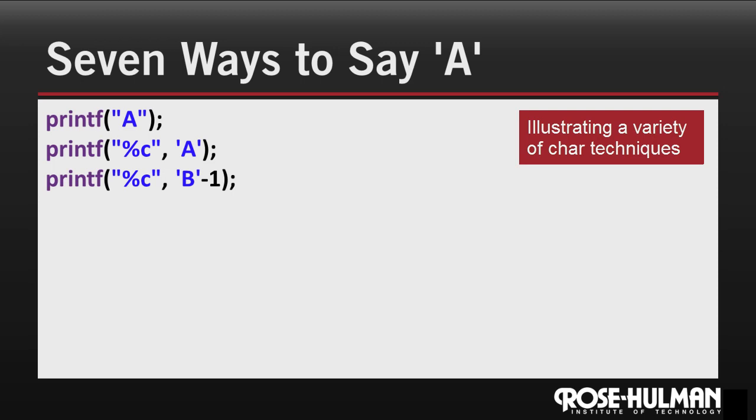Now since characters are just numbers, we can do arithmetic with them. This uses the character format specifier, but we print out the character B minus one. So again, that prints out an A.